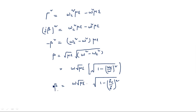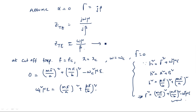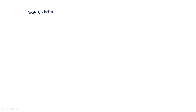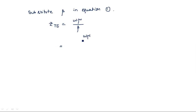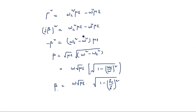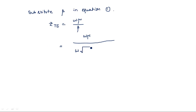Now we substitute β into equation 1, which is Z_TE = ωμ/β. So Z_TE = ωμ divided by ω√(με) · √(1 - (fc/f)²). The ω terms cancel, leaving μ divided by √(με) · √(1 - (fc/f)²).